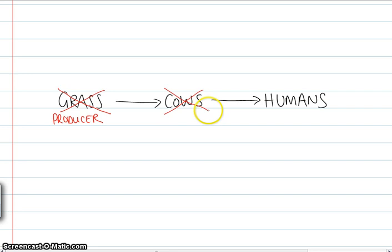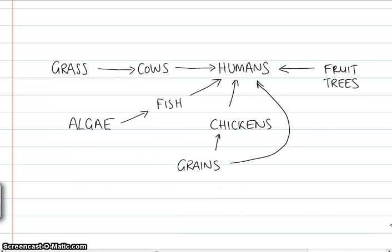Now does that mean there'd be no more humans? Well, not necessarily, because, of course, we get our nutrition from a variety of areas. Now, if there was no more grass, there were no more cows, well, we'd still have algae. We'd still have fish. We could eat fish.